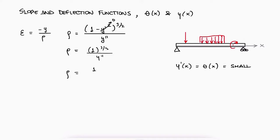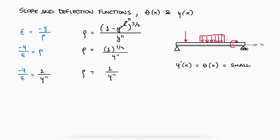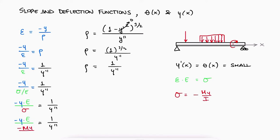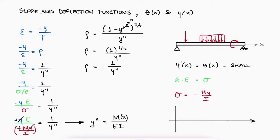1 to the 3 over 2 is still 1, and therefore minus y over strain equals 1 over y double prime. We already knew that the elastic modulus times the strain equals the stress, so if we substitute strain by sigma over E, and then sigma by the bending stress expression, we see that y double prime equals M over EI. The moment is of course a function of x, since it changes as we move along the x-axis of the beam. This is why we draw bending moment diagrams, meaning y double prime is also a function of x.